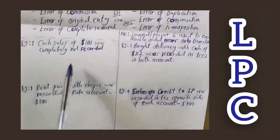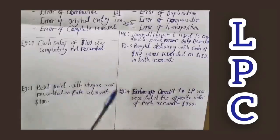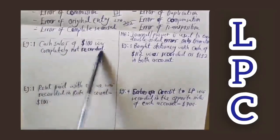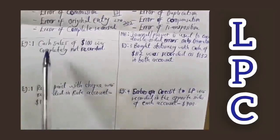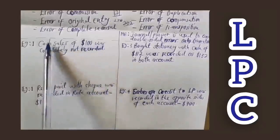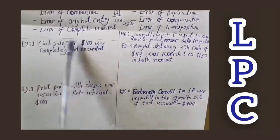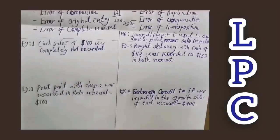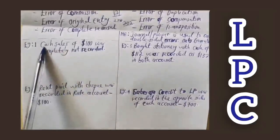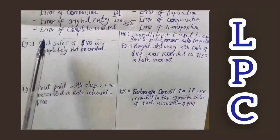To correct this error, since cash sales of $100 was completely not recorded, I'm going to record it again. First, identify the accounts affected: cash and sales. We made sales to a customer on a cash basis, so money was coming in. When money comes in we debit that account, and the item going out — sales — we credit. So we debit cash and credit sales in the journal.